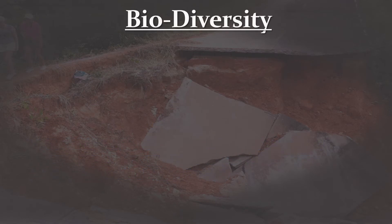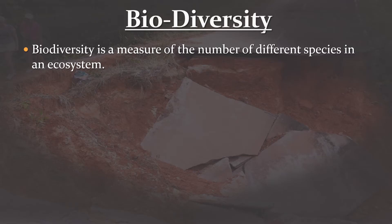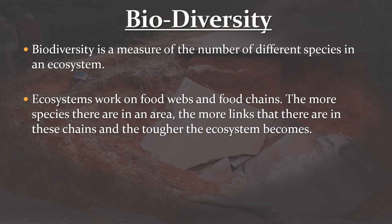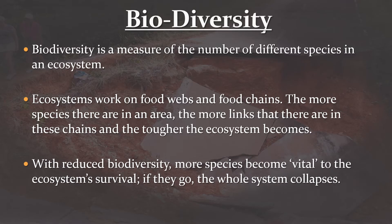So let's think about that word biodiversity. What is it, and why is it so important? Biodiversity is a measure of the number of different species in an ecosystem, and it's very important because ecosystems work on food webs and food chains. The more species there are in an area, the more links there are in these chains, and this gives endurance to the ecosystem. If one species dies out, then other species can still survive by eating other things. But the fewer species there are in an area, the less biodiversity there is, and then the less damage can be done to an ecosystem before it collapses completely, and all the organisms in an area die out.